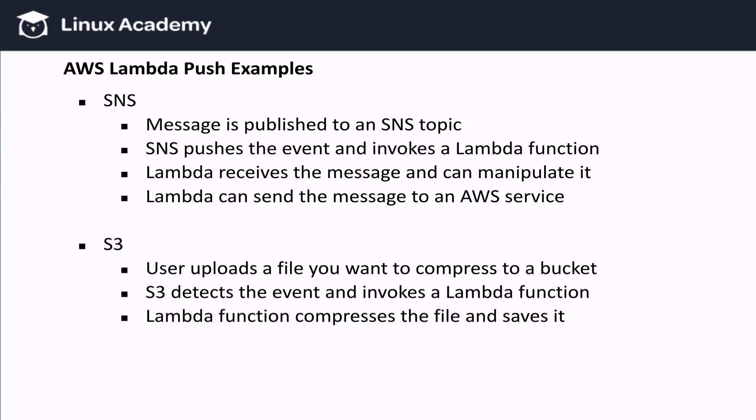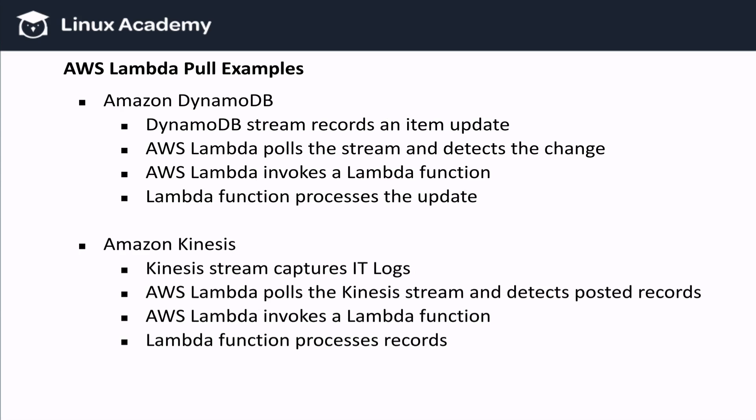Another example, this time with S3: a user uploads a file to a bucket that you would like to compress. S3 has event source mapping configured to notify AWS Lambda, and our function gets called. The function compresses and puts the compressed file in another bucket. On the other hand, with the pull model, we can have a DynamoDB stream set to keep track of item updates. But this time, DynamoDB streams don't notify AWS Lambda — Lambda pulls the DynamoDB streams. If it detects a change, it invokes the corresponding function. This is why the event source mapping is configured with the AWS Lambda API. And the same goes with the Kinesis example.